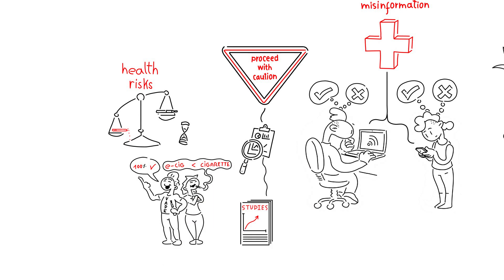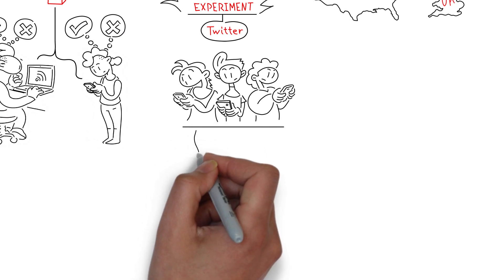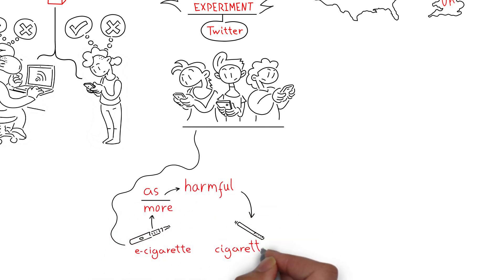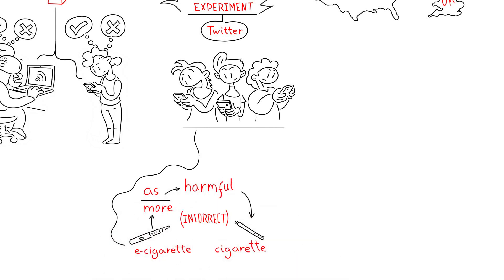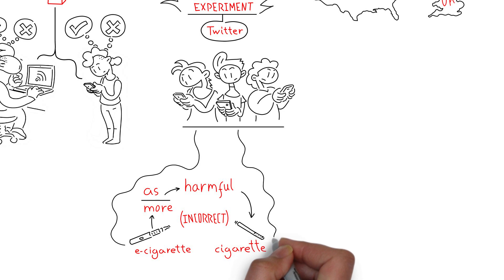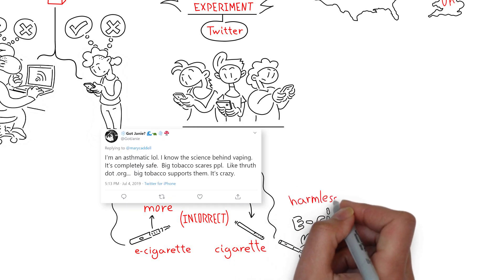In our experiment, we showed two groups of smokers different types of misinformation. The first group were shown messages that e-cigarettes are as harmful or even more harmful than regular cigarettes. The second group were shown messages that e-cigarettes are completely harmless. Both of these messages are untrue.